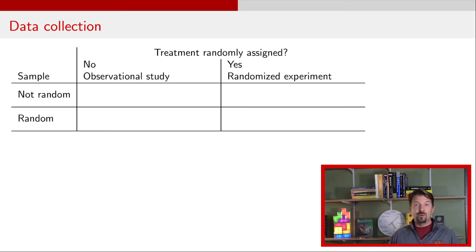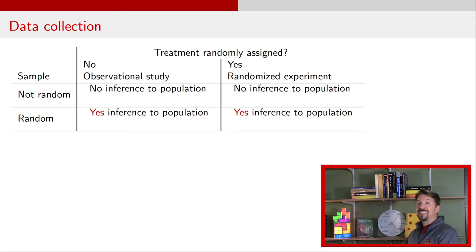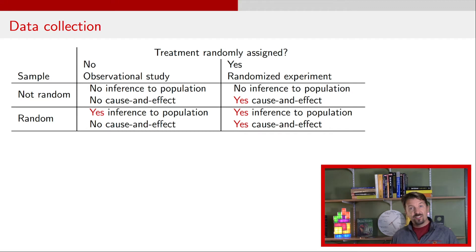Depending on your answer to those two questions you will end up in one of these four categories. If the sample you have is random then you can make an inference to the population. If it's not a random sample then you cannot make a statistically valid statement to that population. If the treatment was randomly assigned then you can have a causal statement that is you can make a cause and effect claim. If the treatment was not randomly assigned then you have an observational study and you cannot make a statistically valid cause and effect statement. So it's very useful to think about every study you see and which of these four bins it falls into.